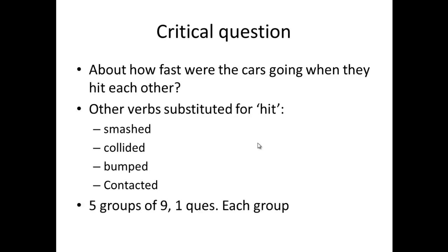In terms of the independent variable, there were five different variables, and each group had nine participants in it. But it wasn't that all the participants watching the film at the same time had the same critical question. There would have been a mixture of participants having different critical questions within each viewing of the experiment.